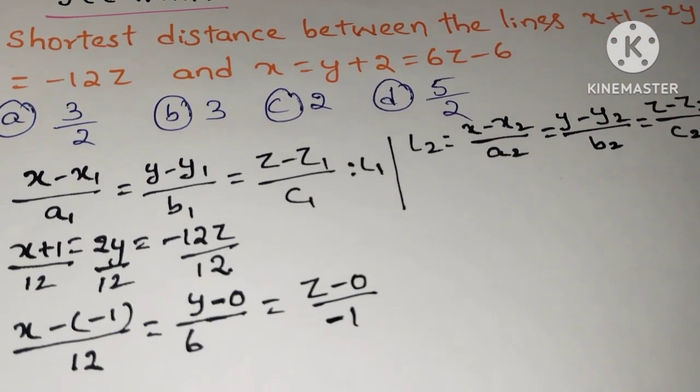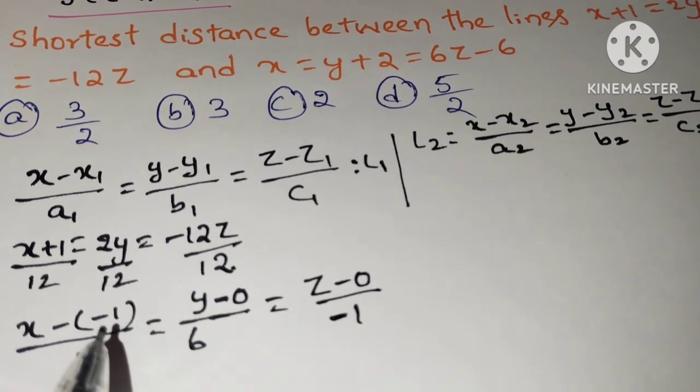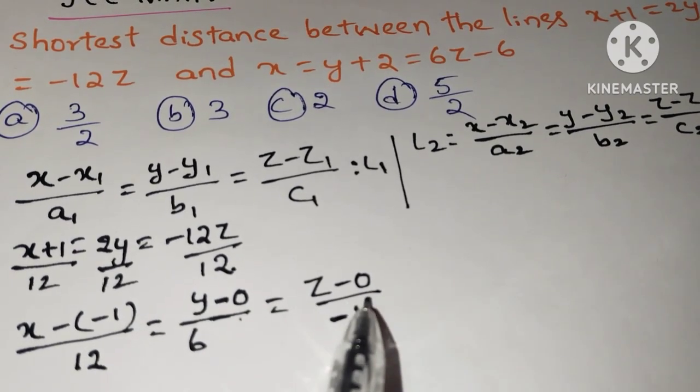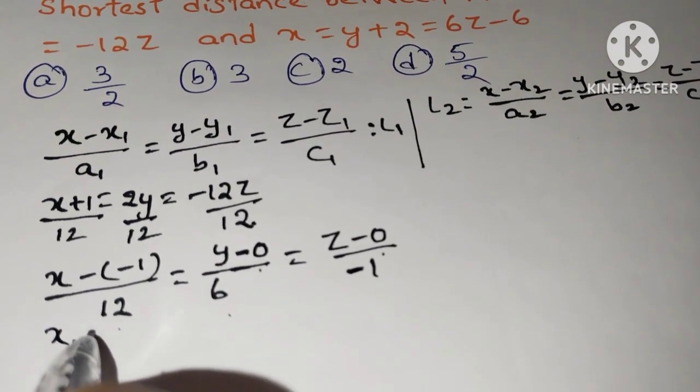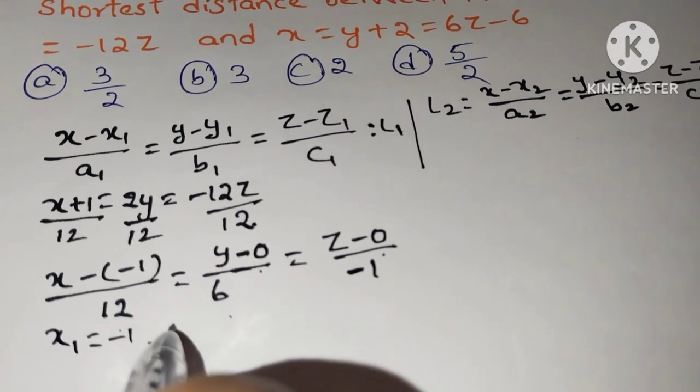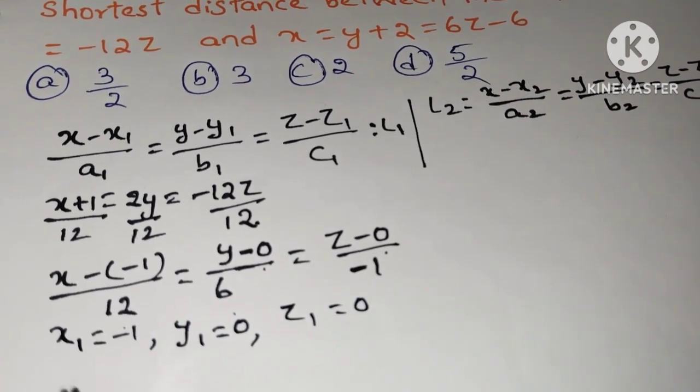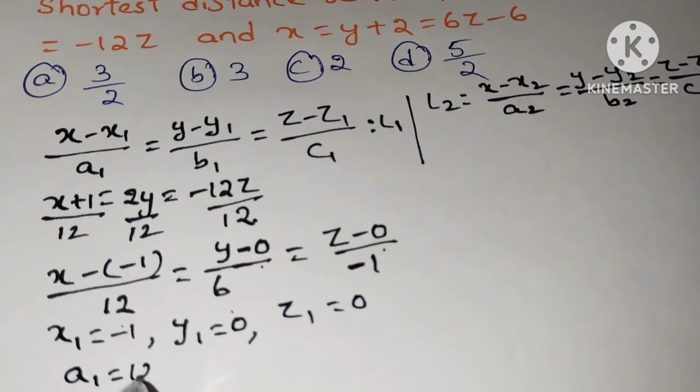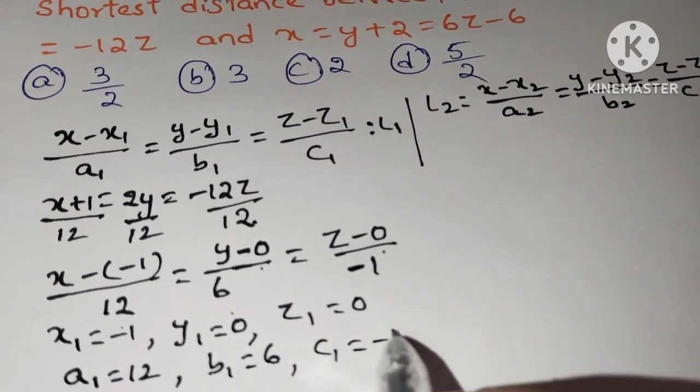Now this form is Cartesian form. So in this we write x1, y1, z1, a1, b1, c1 values. So write x1 equals minus 1, y1 equals 0, z1 equals 0, a1 is 12, b1 is 6, c1 is minus 1.